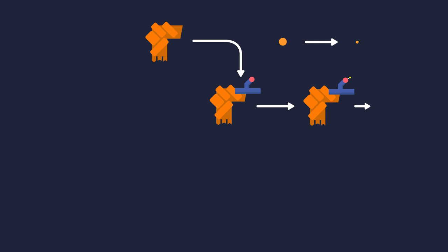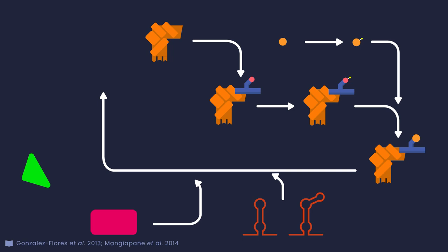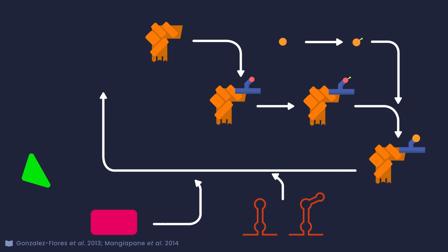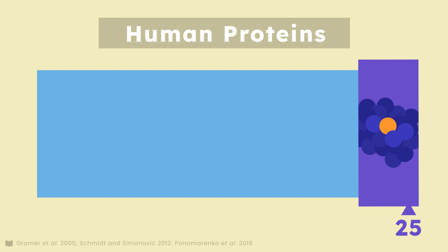It's not too clear why evolution went to all this trouble for an extra option. But despite selenoproteins being the minority, they are essential. Without them, we run the risk of muscular, immune, and cardiovascular diseases.